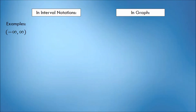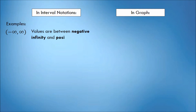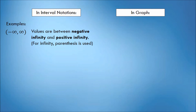The next set of examples will include infinity. Suppose we have the interval (-∞, +∞). This interval indicates that the values included are between negative infinity and positive infinity. We always use parentheses for infinity. Meaning, the value starts at negative infinity up to positive infinity — all real numbers on the number line are included. In the graph, we do not put hollow or shaded circles for infinity. The solution set is from negative infinity up to positive infinity.